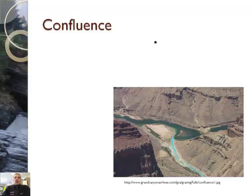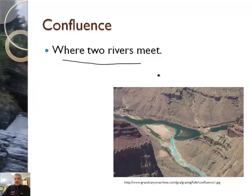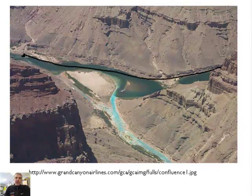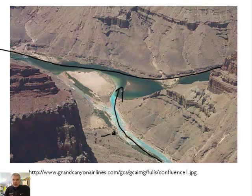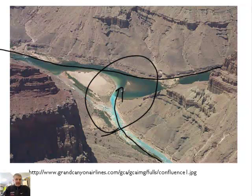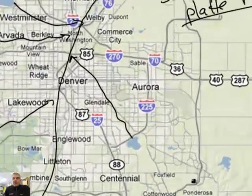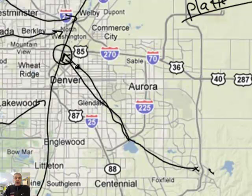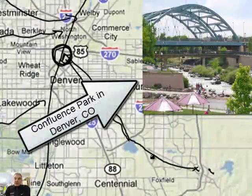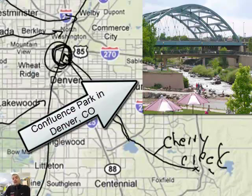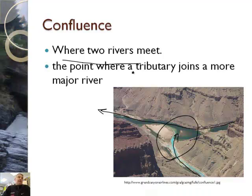A word we need to define: confluence. The confluence is where two rivers meet — the point where a tributary joins a more major river. Here's the Colorado River in the Grand Canyon, and another smaller river joins it at that point — that's called the confluence. Back on the map, I used to live near here in Denver and ride my bike along the creek. Right where Cherry Creek met the South Platte River, there's actually a place called Confluence Park, where people would go kayaking.